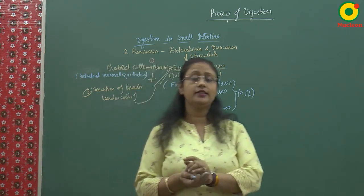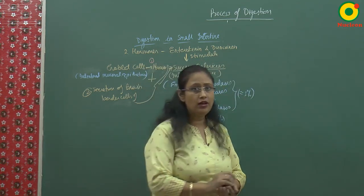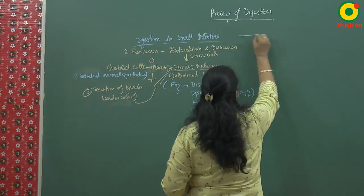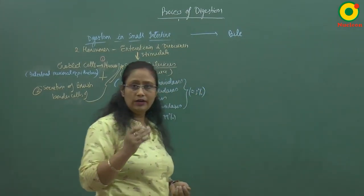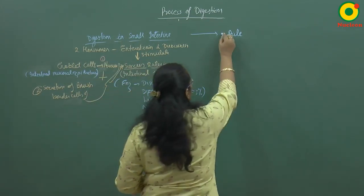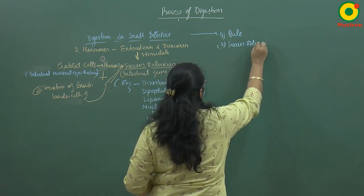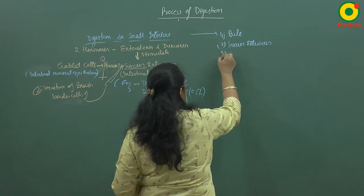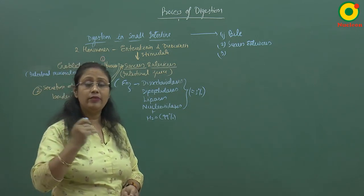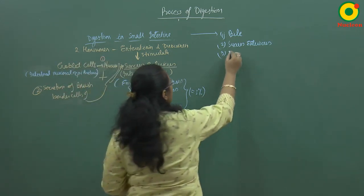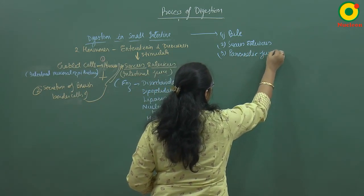Now in the small intestine, bile arrives through the hepato-pancreatic duct. In addition, succus entericus and the intestinal juices are secreted from the wall of the intestine, and pancreatic juices arrive into the intestine from the pancreas.